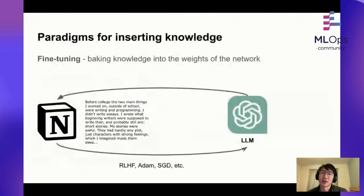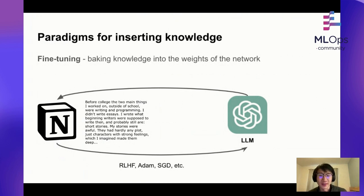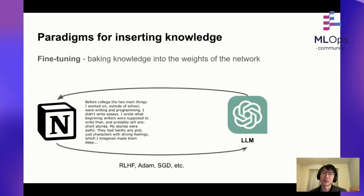There are a few paradigms for injecting knowledge into the weights of the network. Probably the most classic machine learning example is through some sort of fine-tuning, training, or distillation process. The idea is that you take this data and basically run some sort of optimization algorithm on top of it that actually changes the weights of the network itself to learn the new content you're feeding it. If you look at a pre-trained model like ChatGPT or GPT-4, they already internalize a huge amount of knowledge — for instance, anything about Wikipedia.